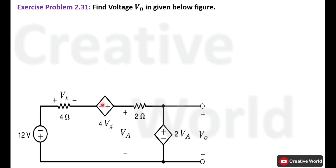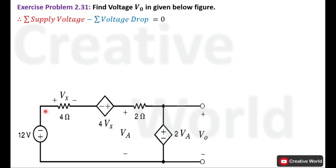So without wasting time, let's proceed towards the solution. This is a closed loop circuit and we will use Kirchhoff's Voltage Law to solve this problem. This circuit includes only a single closed loop, and while using this single closed loop we cannot solve this problem, so we have to assume an imaginary loop that will be present across this voltage Va. We are assuming that there is an element across which voltage Va appears.